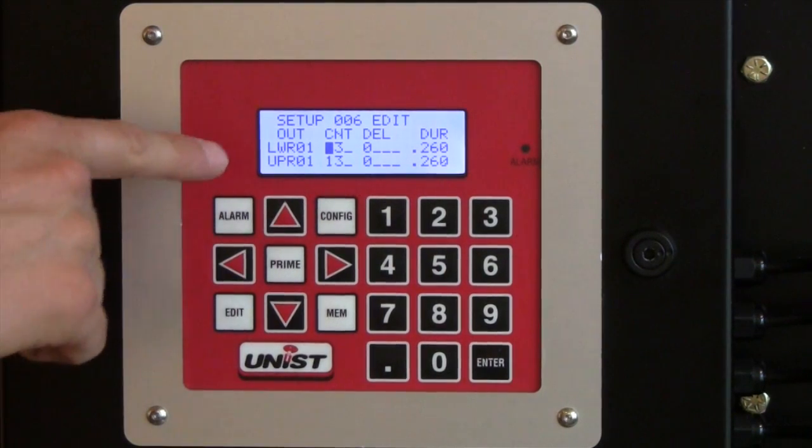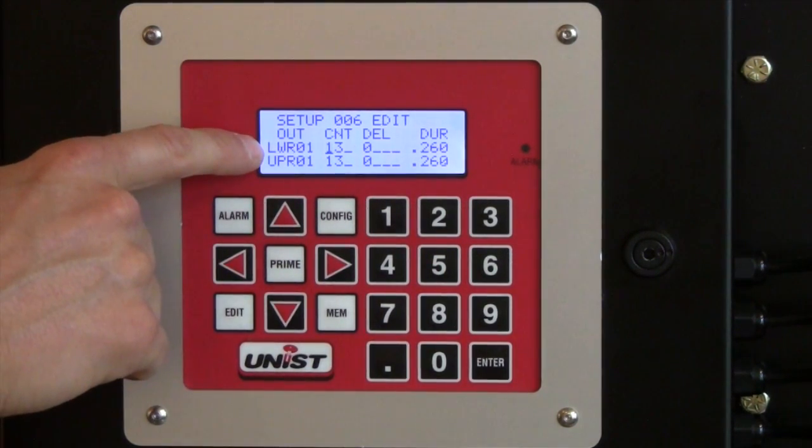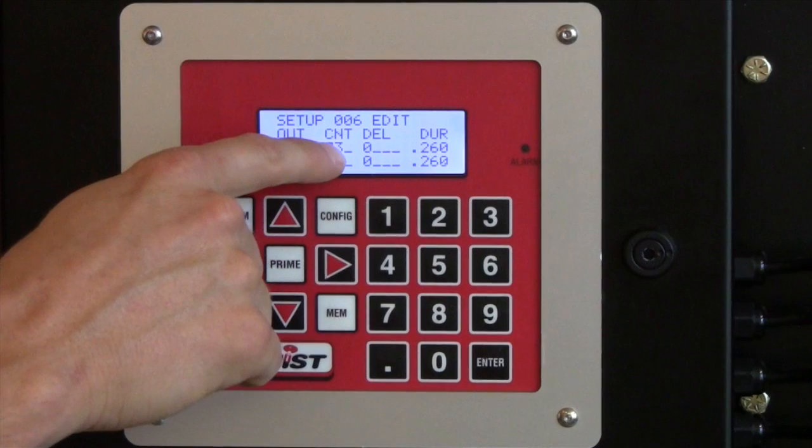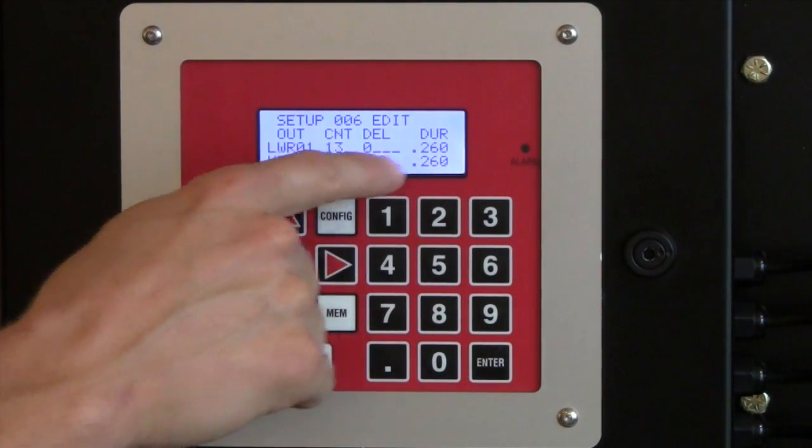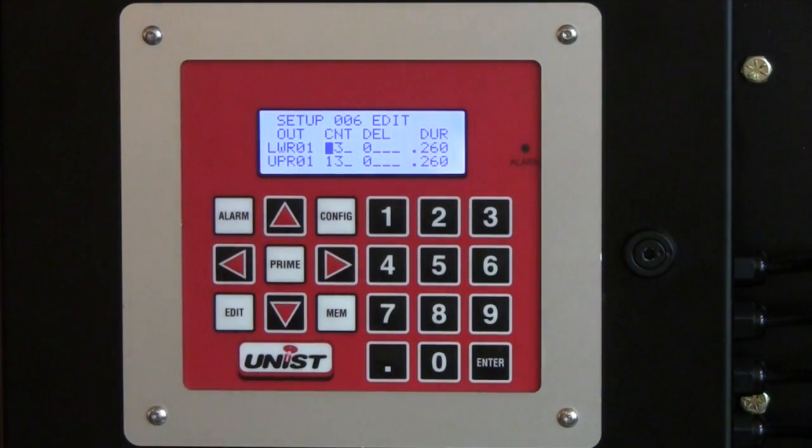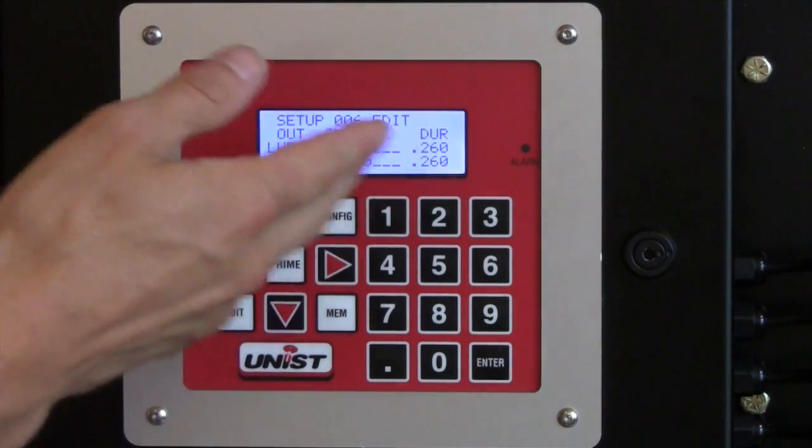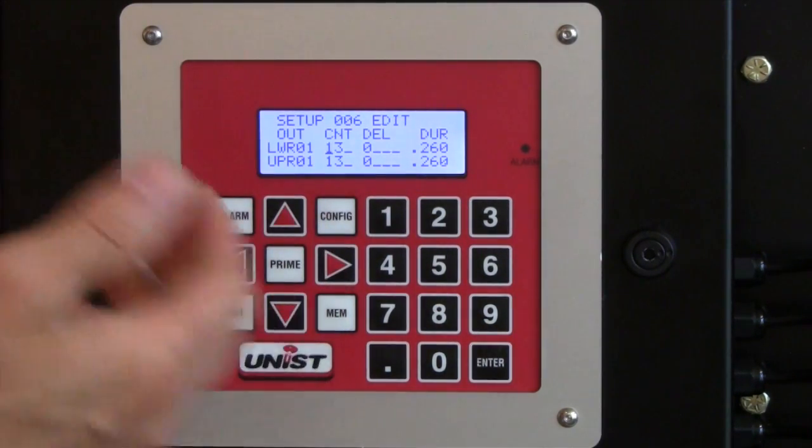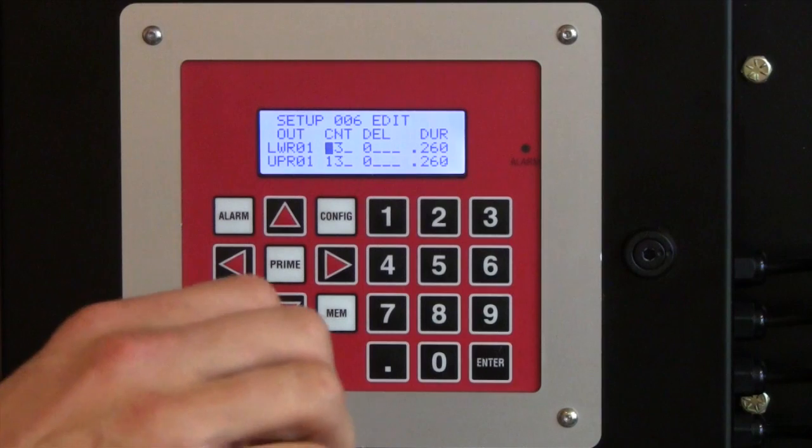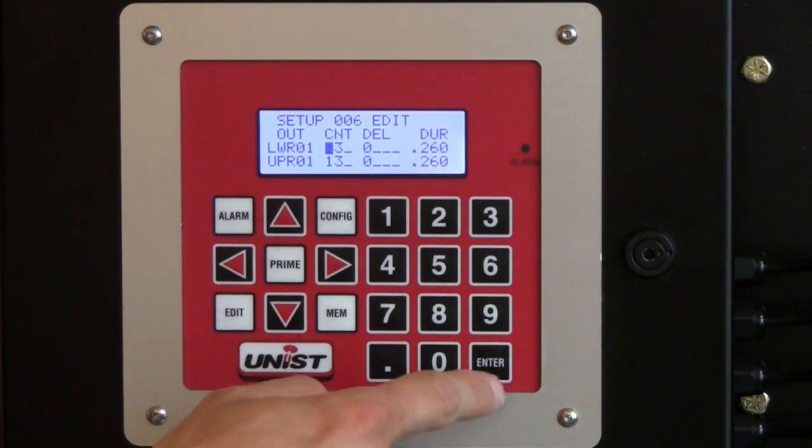And our job is created. So you see the outputs. There's lower roller one and upper roller one. The count every 13 strokes of the press. The valves are going to fire for 260 milliseconds. And that job is set. So this is the exact settings needed to apply an even film thickness of 10 microns on the top and bottom of the coil.